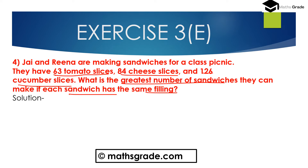We have 63 tomato slices, 84 cheese slices, and 126 cucumber slices. We have to find the greatest number of sandwiches such that each sandwich has the same filling — that is the Highest Common Factor of 63, 84, and 126. We can find this using prime factorization or the continued division method.